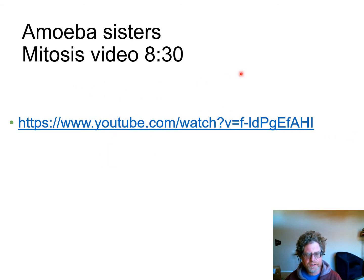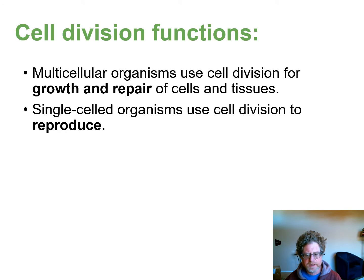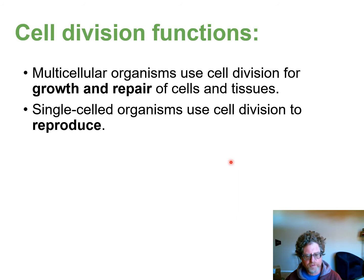Watch the mitosis video from the Amoeba Sisters — it will talk about cell division to make identical cells. In multicellular organisms, the purpose of cell division is growth, like we saw in the sea urchin, and repair of damaged tissue. Single-cell organisms use cell division to reproduce, so you go from one amoeba to two amoebas, from one bacteria to two bacteria.